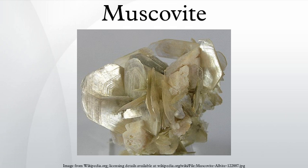Muscovite is in demand for the manufacture of fireproofing and insulating materials and to some extent as a lubricant. The name muscovite comes from muscovy glass, a name given to the mineral in Elizabethan England due to its use in medieval Russia as a cheaper alternative to glass in windows. This usage became widely known in England during the 16th century, with its first mention appearing in letters by George Turberville, the secretary of England's ambassador to the Russian Tsar Ivan the Terrible, in 1568.